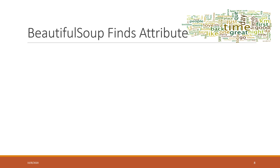We can load web pages into Python — actually the source code — and inspect HTML structures using the browser's inspect tools. We can use BeautifulSoup to parse the specific parts of the HTML we want. So how can we extract the attributes that we're interested in?